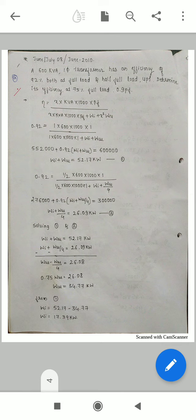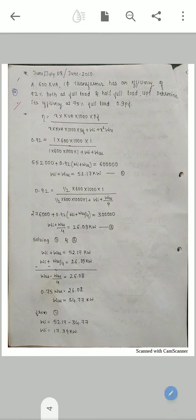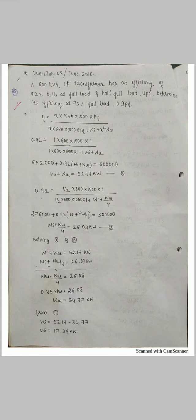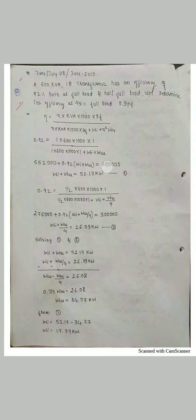Before that, we need to find how much copper loss and iron loss there are. First, using the efficiency formula, I've taken 92% as 0.92. For full load, x equals 1, Wi and Wcu are unknown. By doing this calculation, I got this equation.